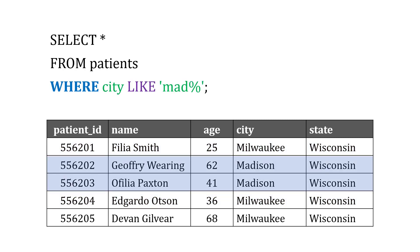We could also use wildcards with LIKE. So we might say WHERE the city is LIKE 'MAD%' with the wildcard. That means give me any patient where the city starts with MAD, which is Madison in this case — we put the wildcard at the end. You could also change this to just LIKE 'M%', and in that case it's going to include both Milwaukee and Madison, given that we have a shorter number of letters before the wildcard character.